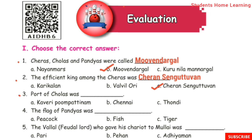Third one: The port of Cholas was Dash. A port is where ships come and anchor. What was the port of the Cholas? Answer: Kaveri Kumbaттinam.